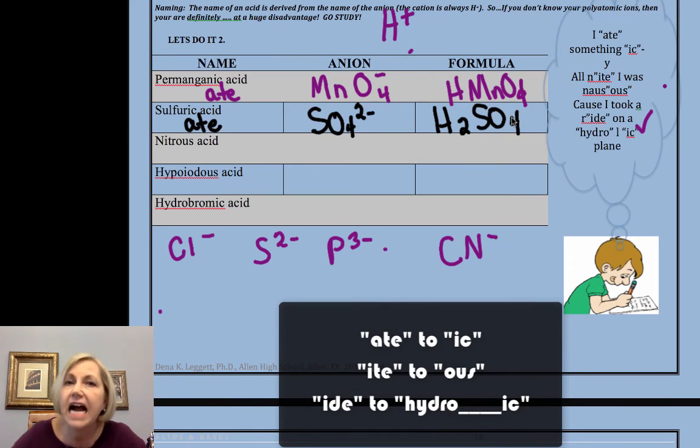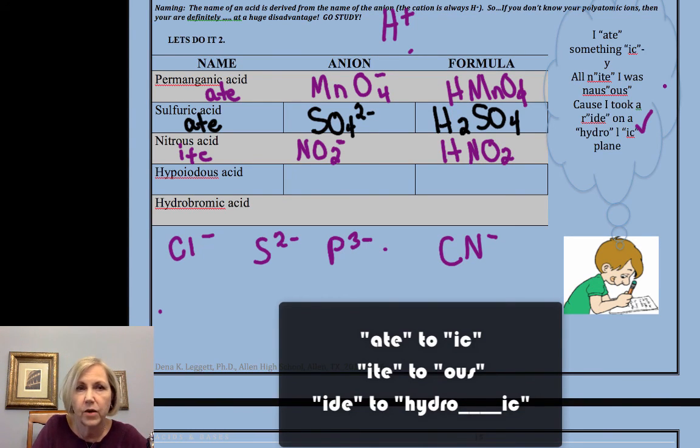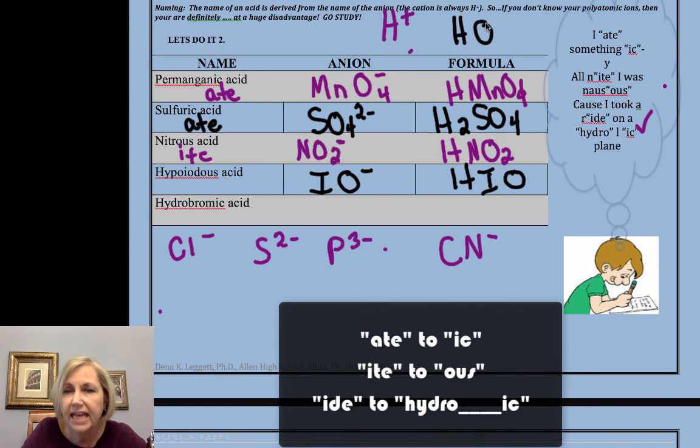-ous and -ite go together. Nitrite is NO2 minus 1. And you can search YouTube or ask me for the link. I made a video reviewing our polyatomic ions. So I can give you that link. Hypo-ous would be hypo-ite. So hypoiodite is IO minus.